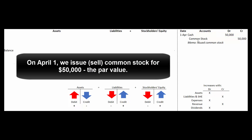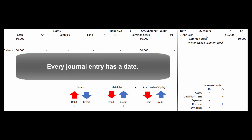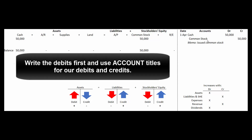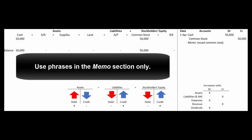Common stock is going up by $50,000. Common stock is a shareholders' equity account, and shareholders' equity accounts increase with credits. Cash has gone up by $50,000 and common stock has gone up by $50,000, so the accounting equation is in balance. Note: we use specific account titles in the journal entry — not phrases or sentences. The only time we use sentences is in the memo section, where we remind ourselves what just happened.